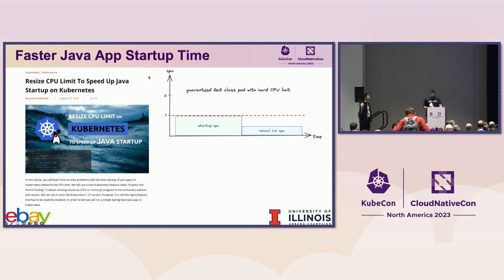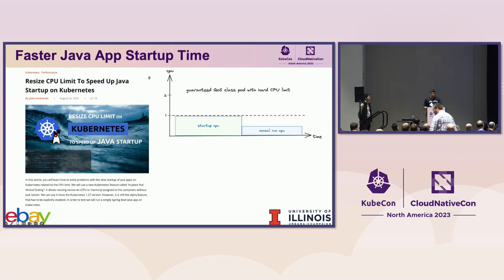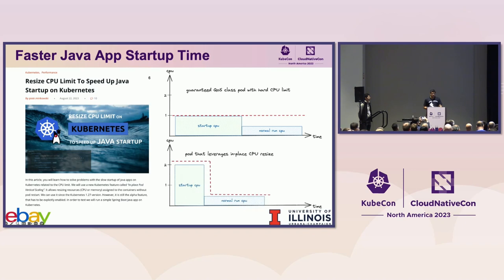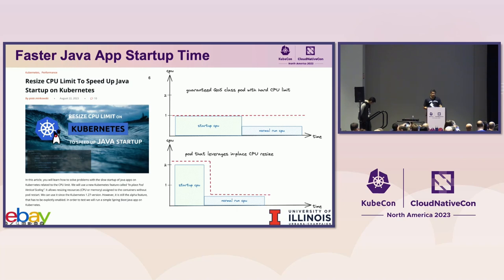If you have a guaranteed QoS class pod with hard CPU limits optimized for the runtime need, it results in long startup times — and the alternative is over-provisioning. In this use case, the CPU limits are resized lower after the app startup phase is complete. This means a job can start and finish faster, we can power down unneeded nodes sooner, and it helps you become energy conscious and cost conscious.